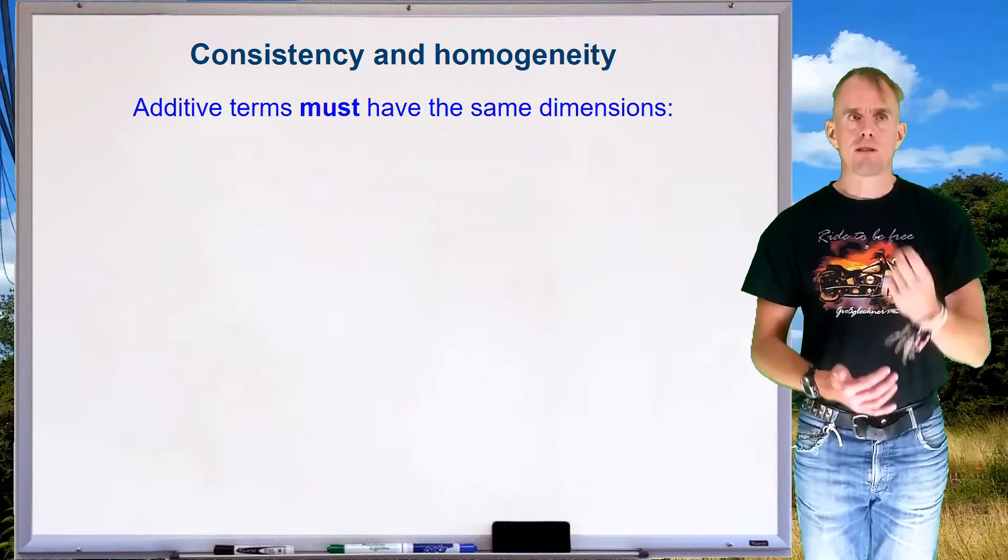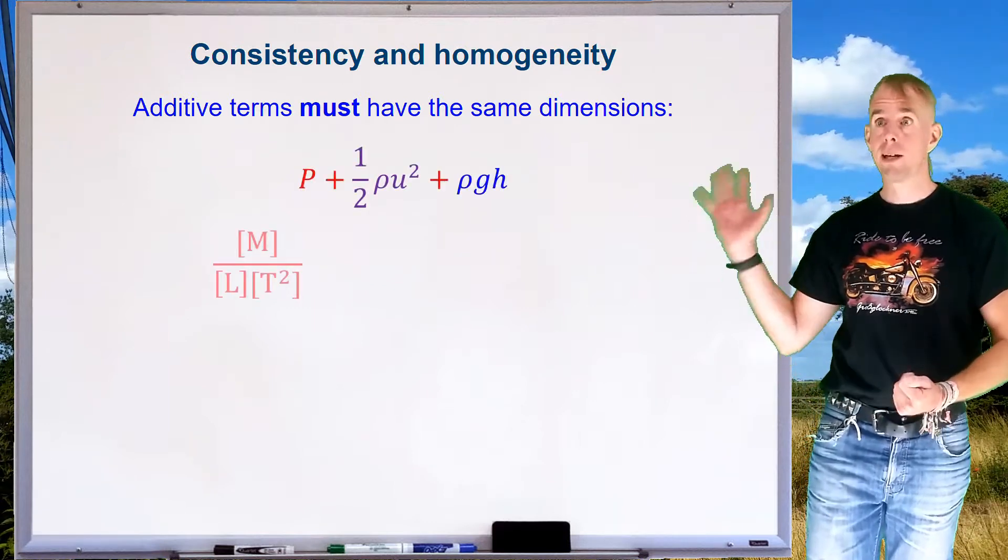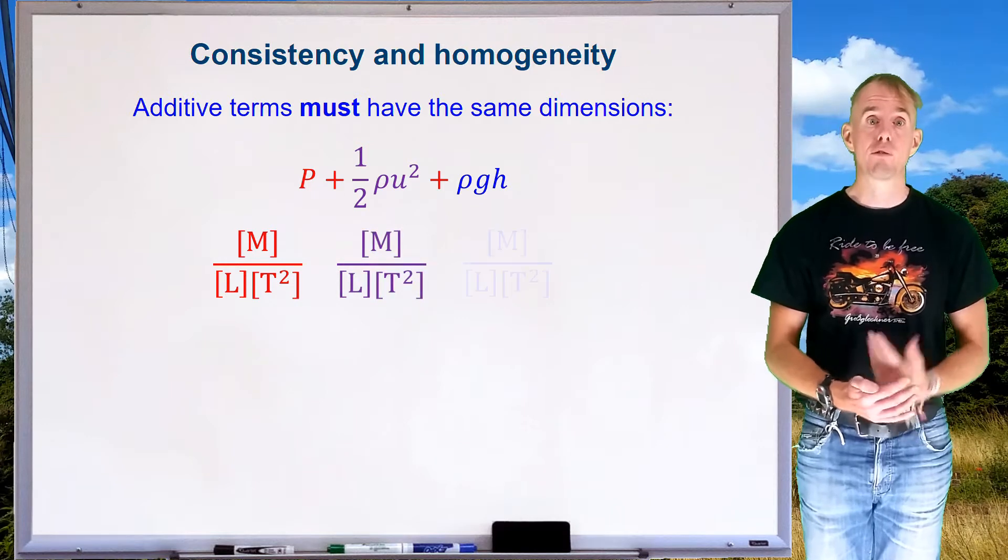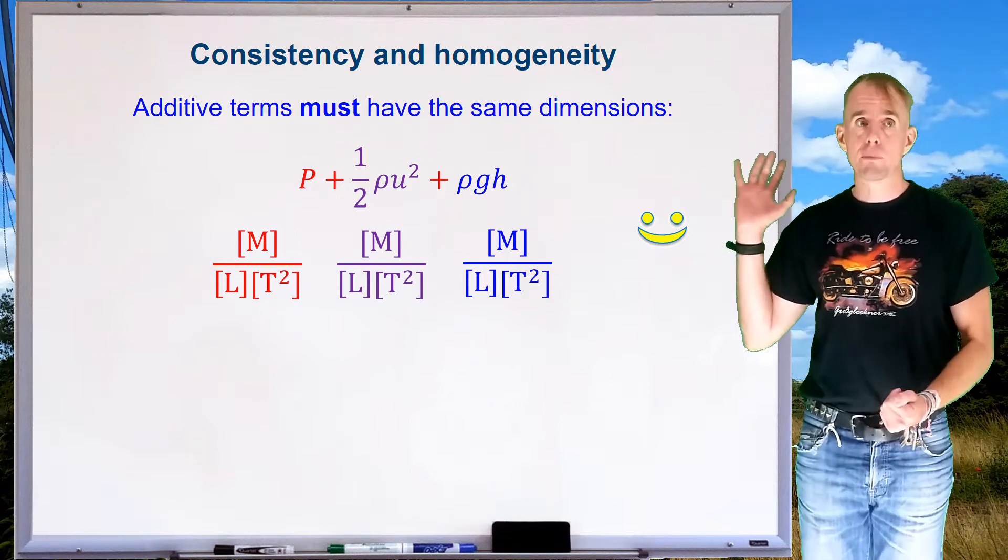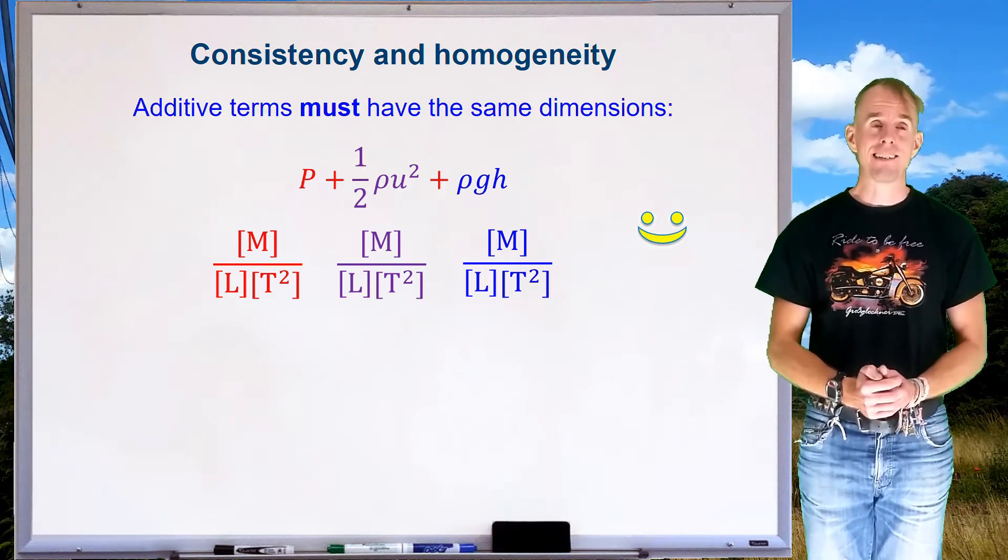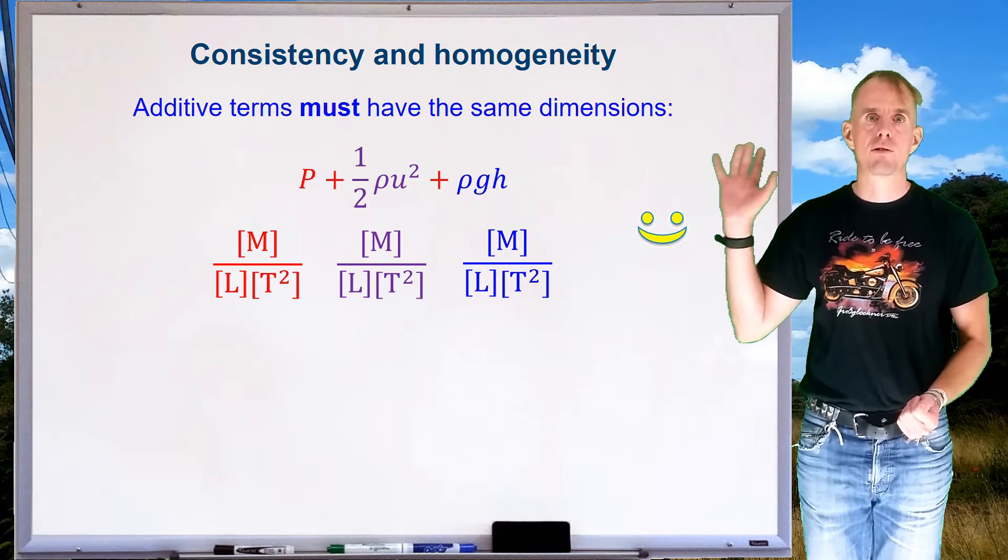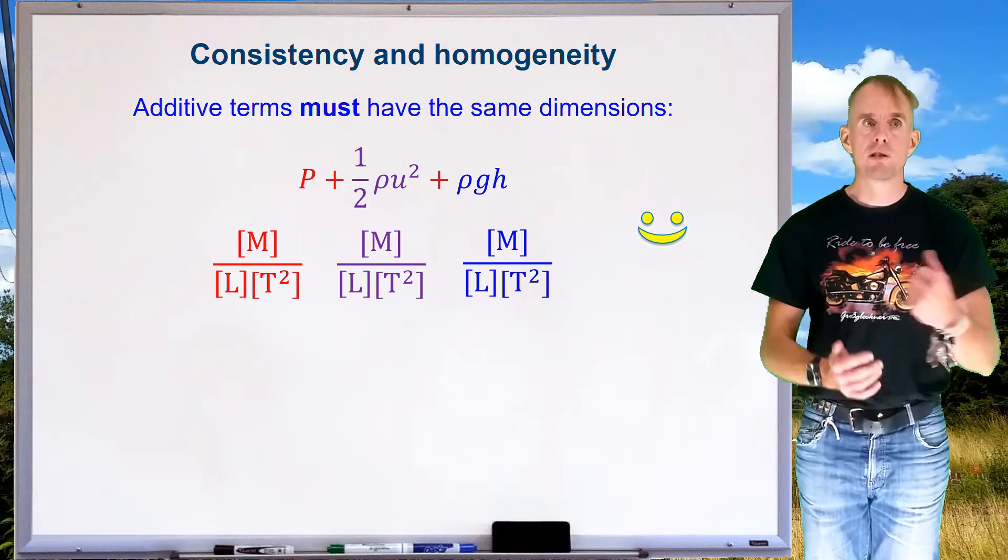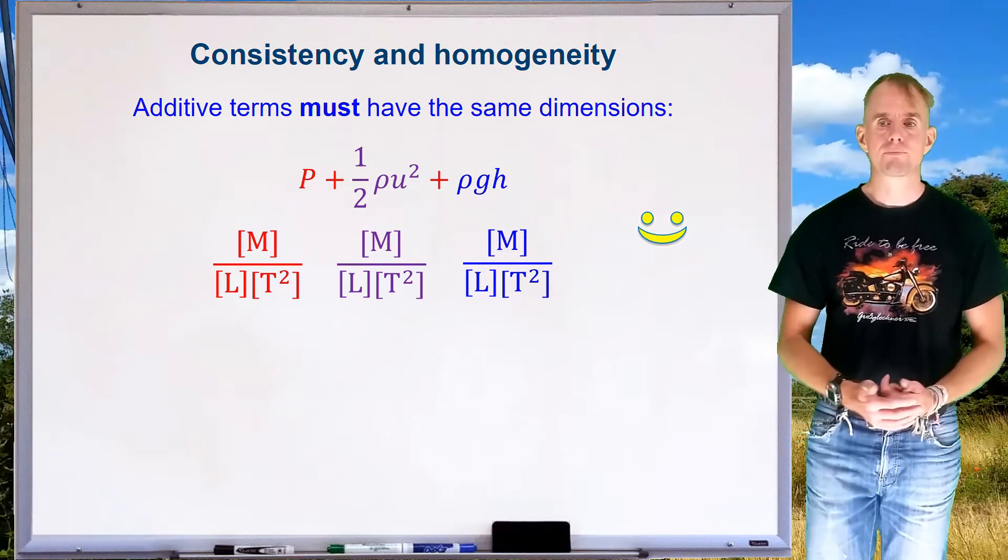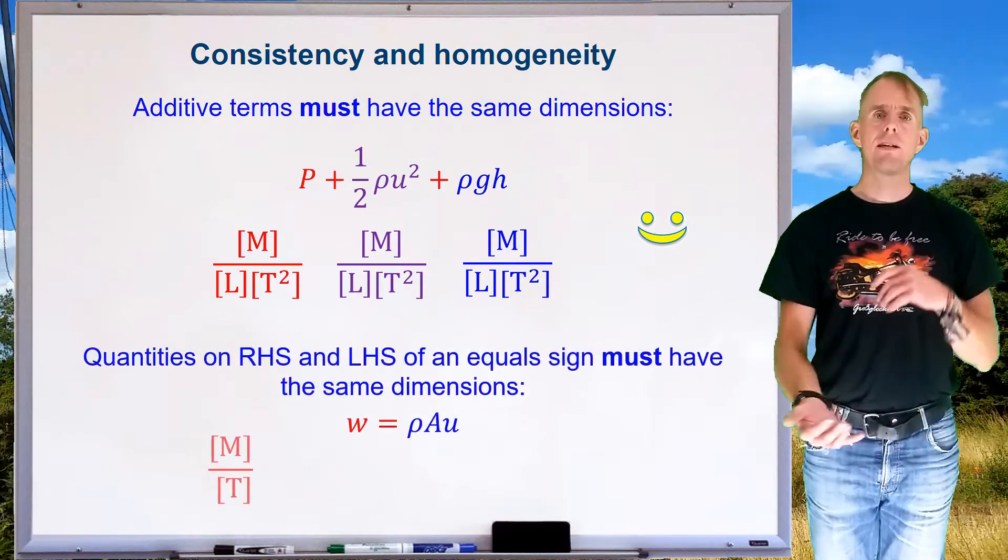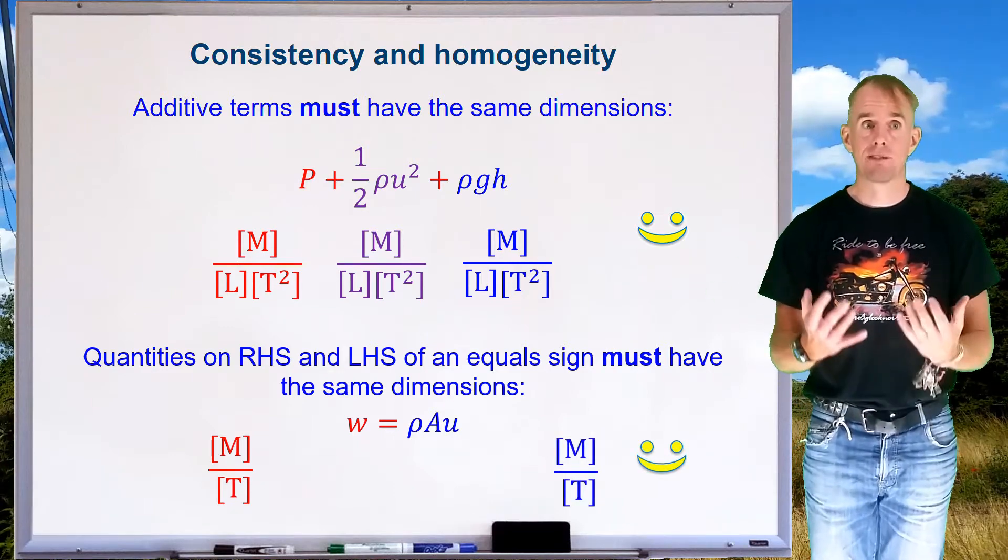Now, second rule, homogeneity. Additive terms must have the same dimension. So if we think about pressure once more, here on the whiteboard, I've put an equation that involves pressure. It's Bernoulli's equation. You will be familiar with this from your fluid mechanics. We've already seen that pressure takes fundamental units of mass divided by length divided by time squared. Therefore, anything we add to it has to have those same fundamental units. So a half rho u squared is mass over length over time squared. rho gh has the same units.